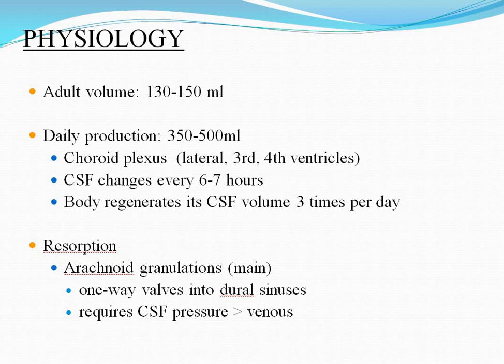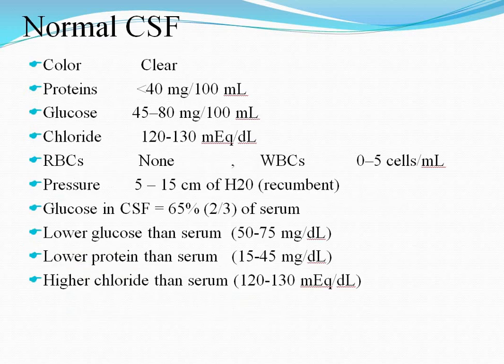Reabsorption of the CSF takes place at the arachnoid granulations. Flow into the dural sinuses requires CSF pressure greater than the venous pressure. Normal CSF is clear in color, with protein less than 40 mg per 100 ml, glucose 45–80 mg per 100 ml, chloride 120–130 mEq per deciliter, and no RBCs.